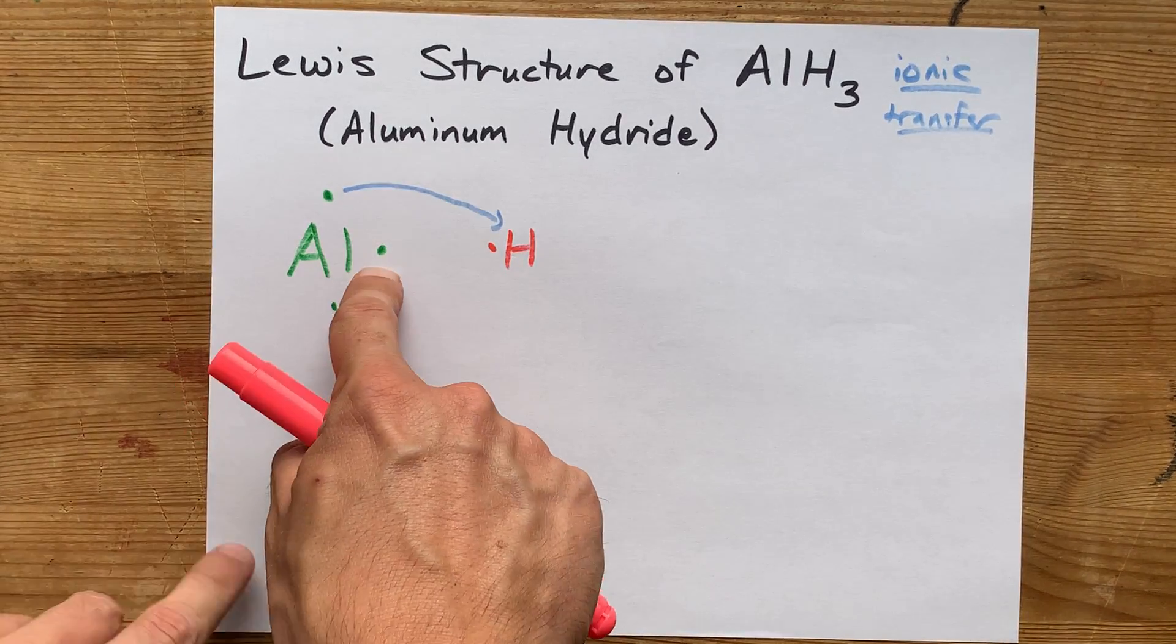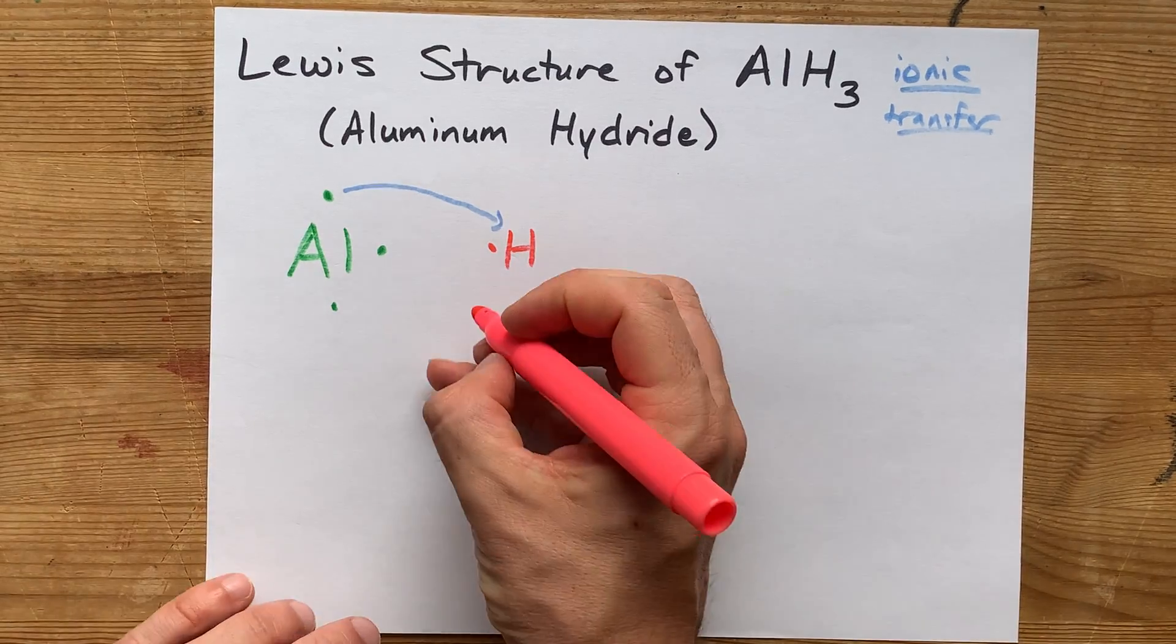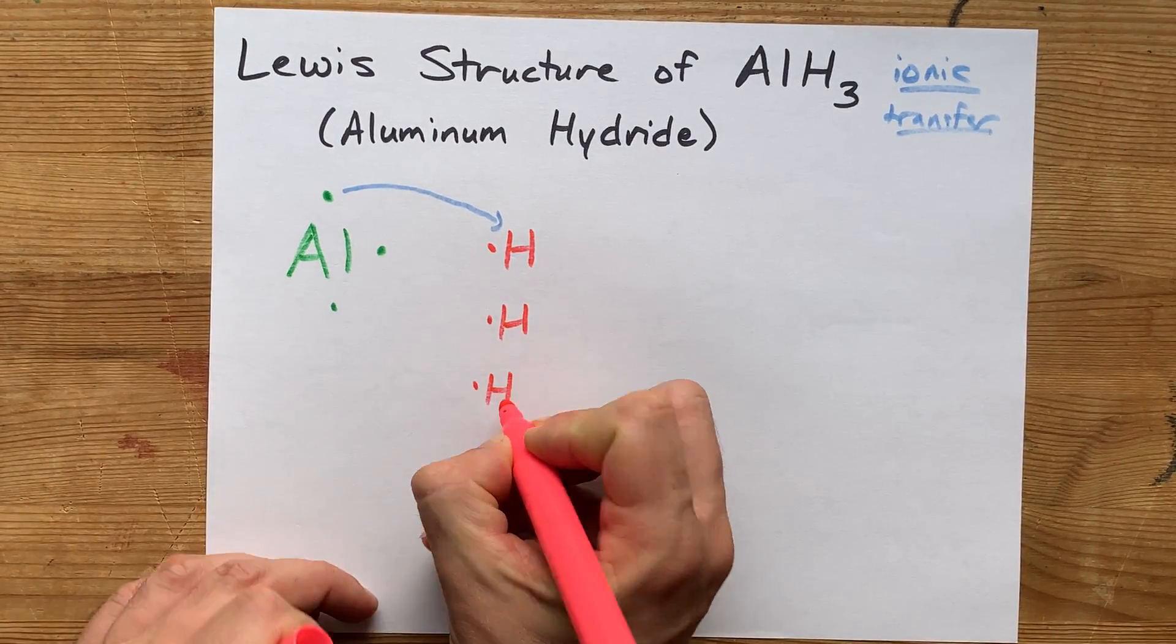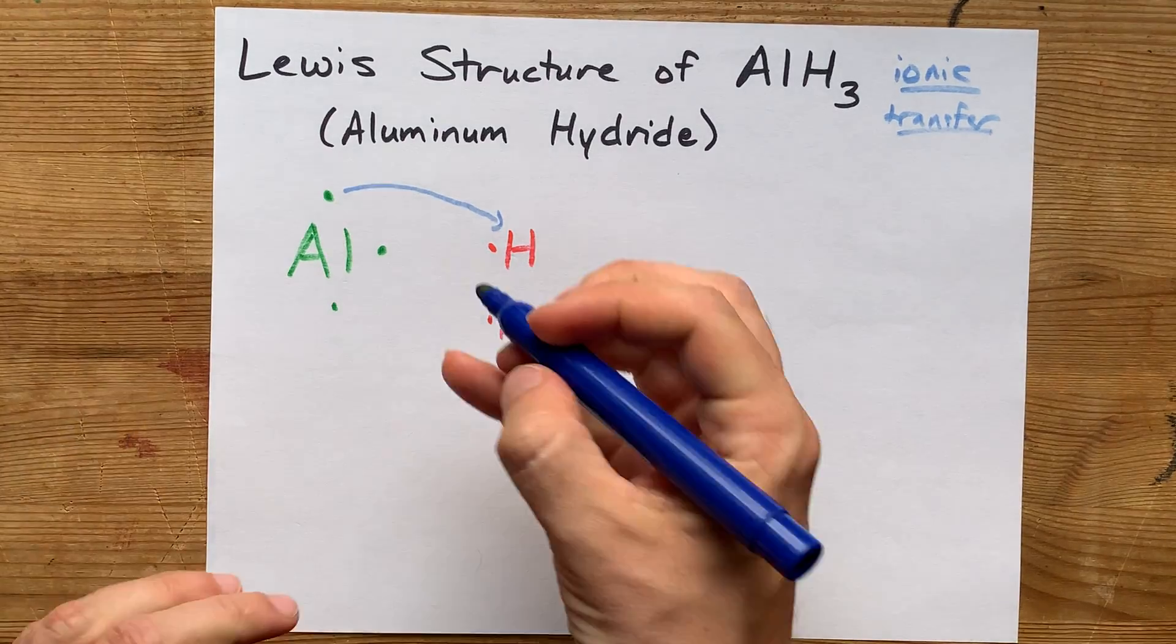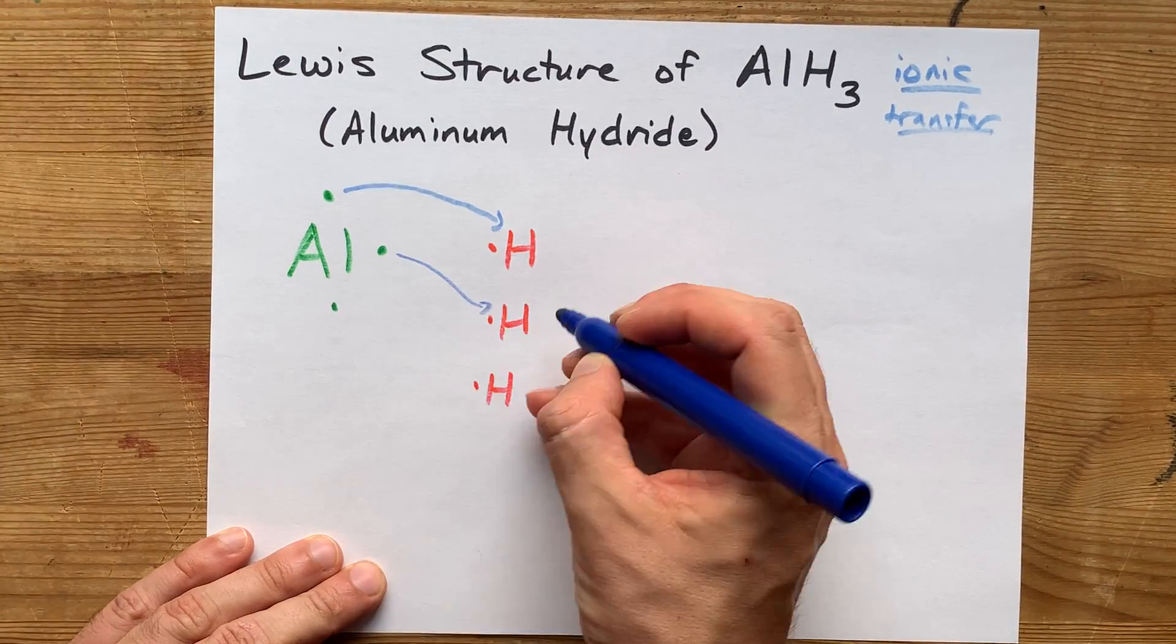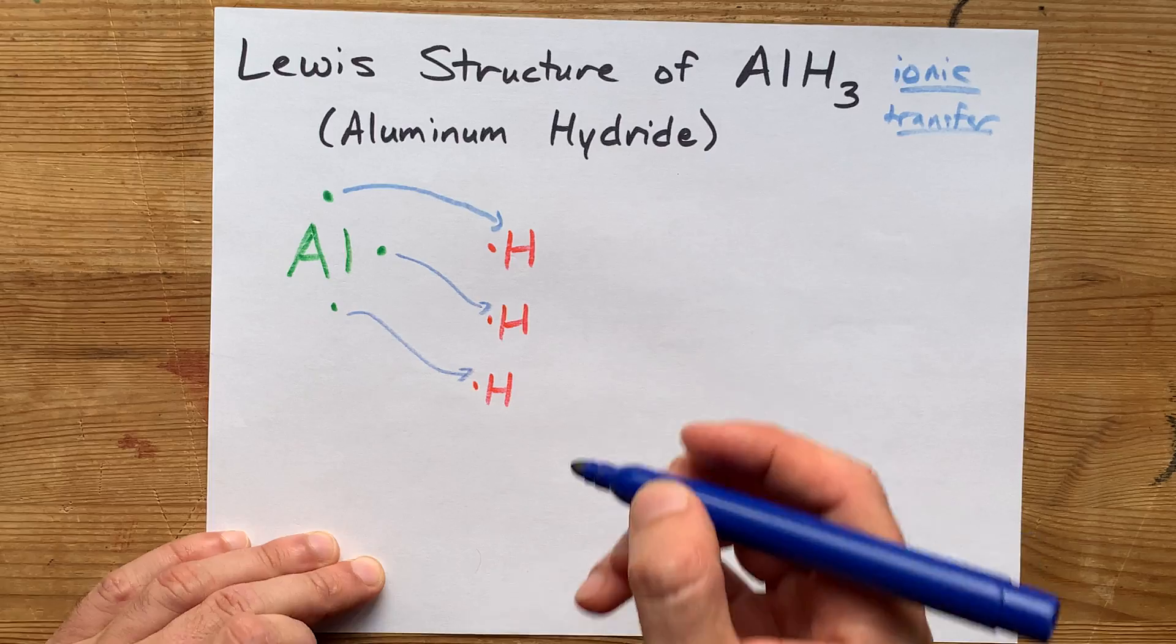But this aluminum still has two other electrons to deal with. We're going to need two other hydrogens in order for aluminum to empty its outer shell, or valence shell.